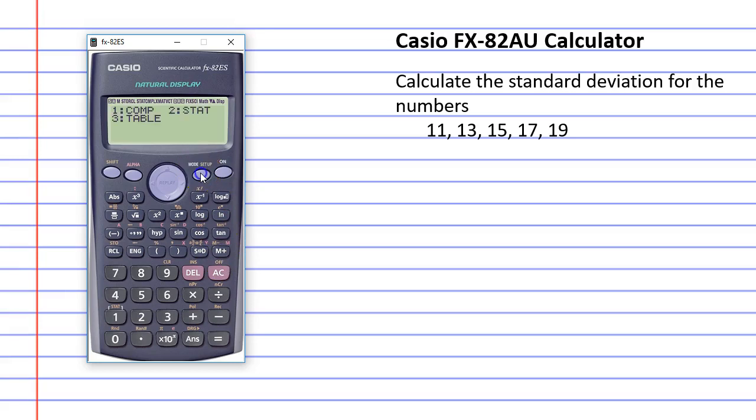So, we'll click on mode and we want to get into statistics mode. So, we'll push the number 2 and the very first option is what we want, 1-var. Okay, here is where we can enter our five data values.